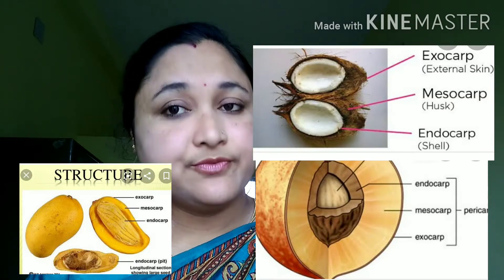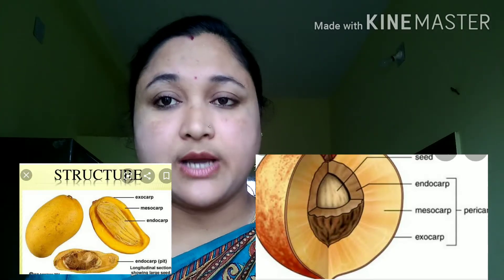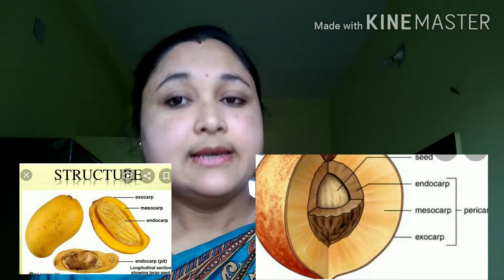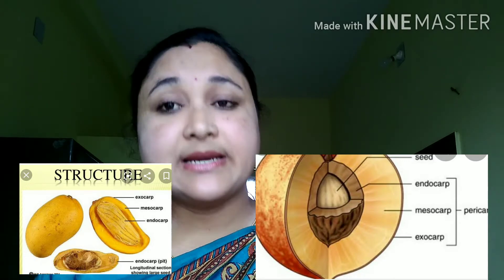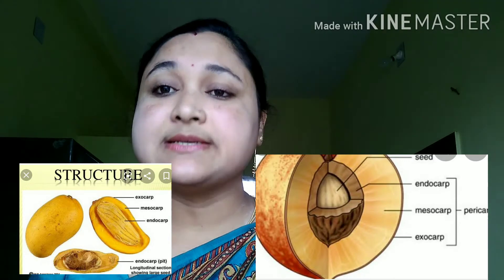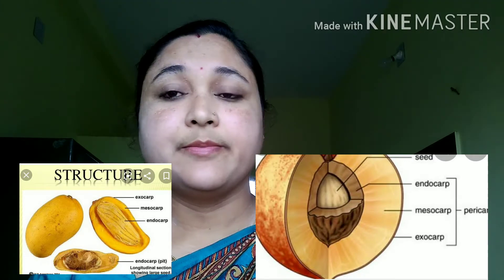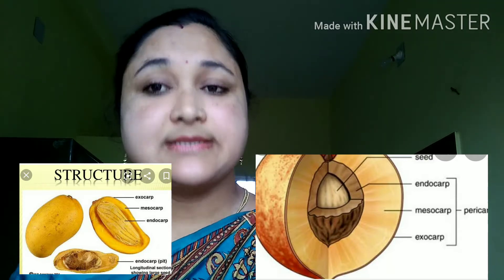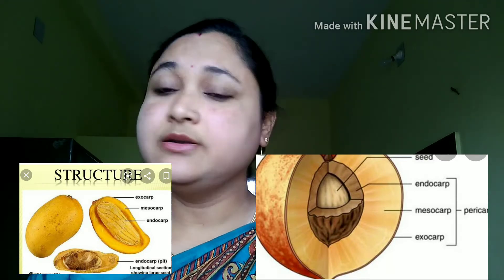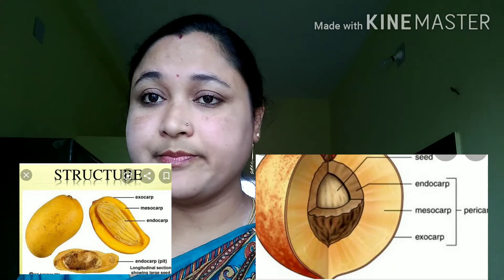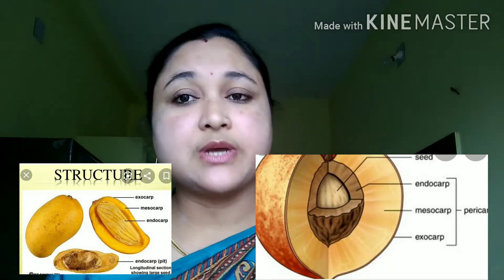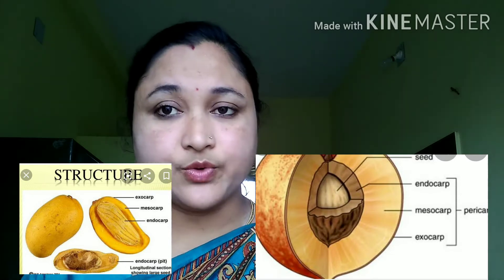The innermost layer is the endocarp, which is the layer directly surrounding the seed. It is hard in texture. This was the structure of the fruit.